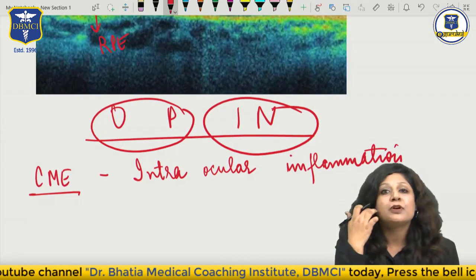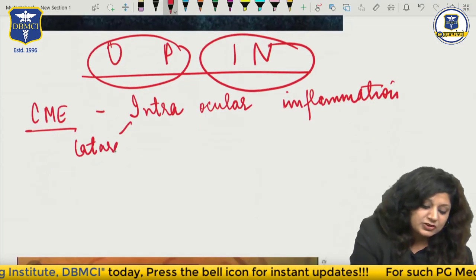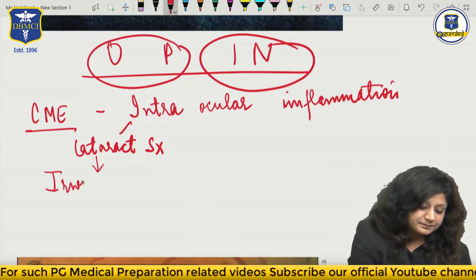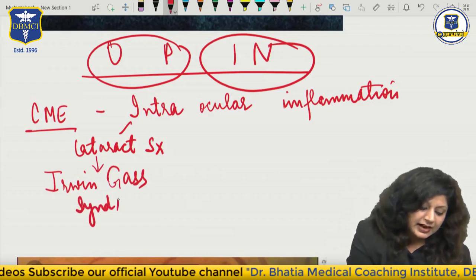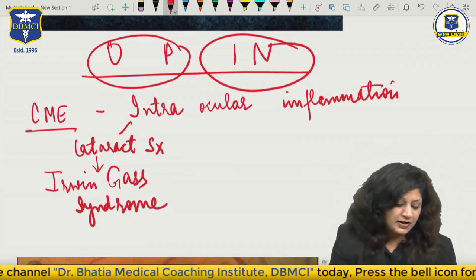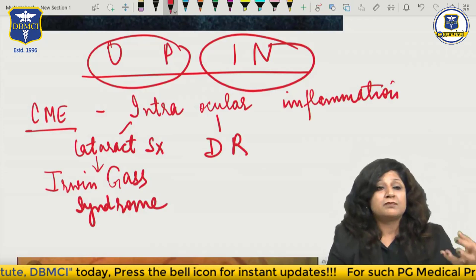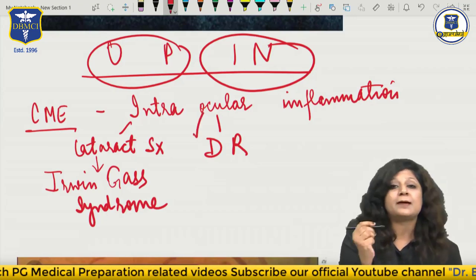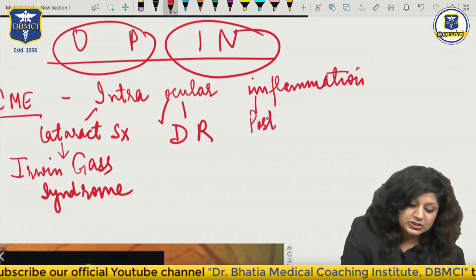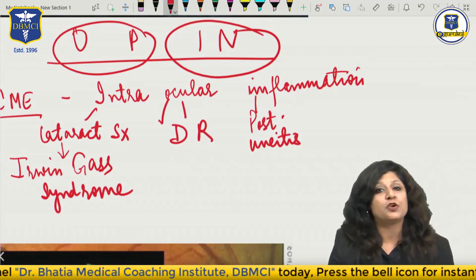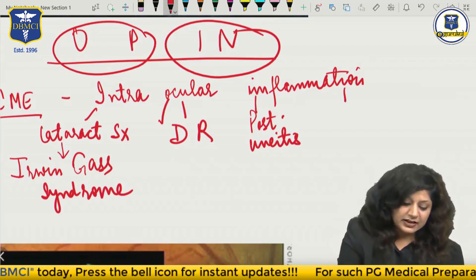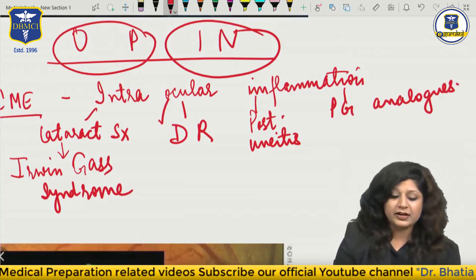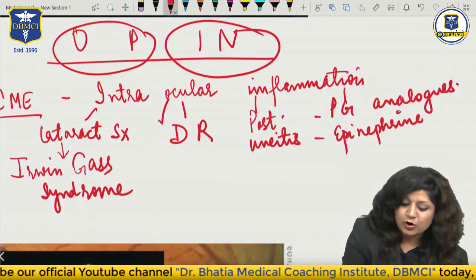This intraocular inflammation can be due to cataract surgery - any surgery, but cataract surgery is most commonly done - it has the special name Irvine-Gass syndrome. It can occur due to diabetic retinopathy, which contains maculopathy - the most common cause of vision loss. We can also have uveitis, especially posterior uveitis. Additionally, certain drugs - prostaglandin analogs are very notorious for causing cystoid macular edema, and epinephrine can also cause cystoid macular edema.